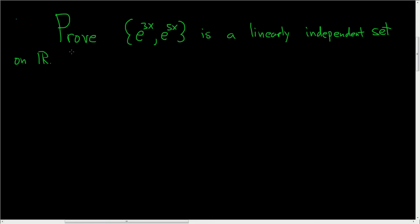We're being asked to prove that these functions are linearly independent. Before we do the proof, recall what we mean by the Wronskian of two functions.